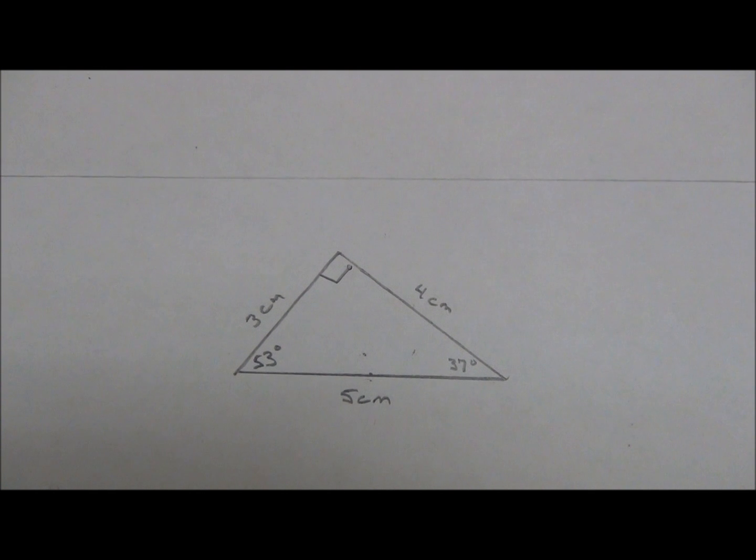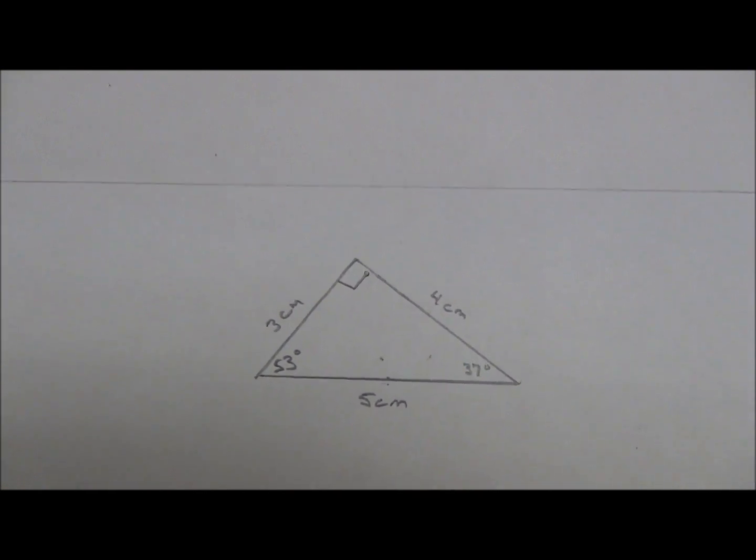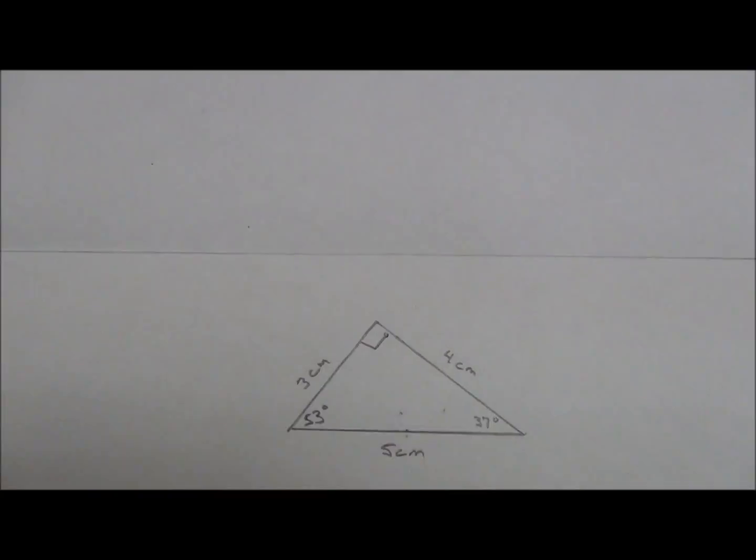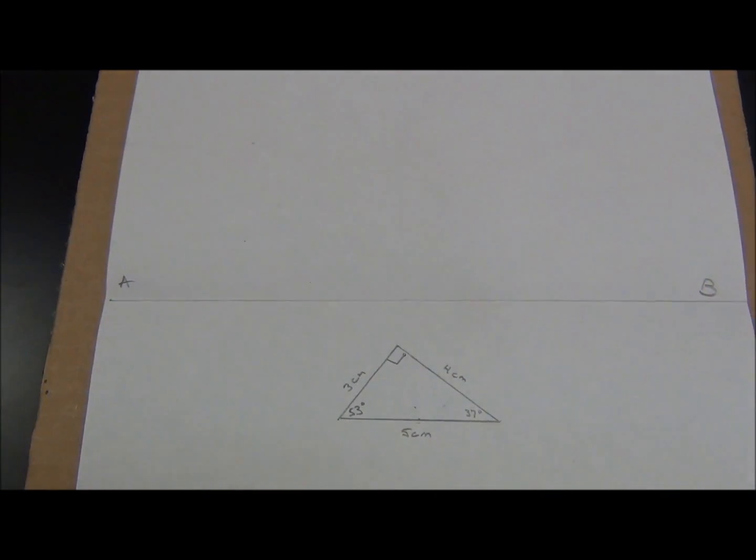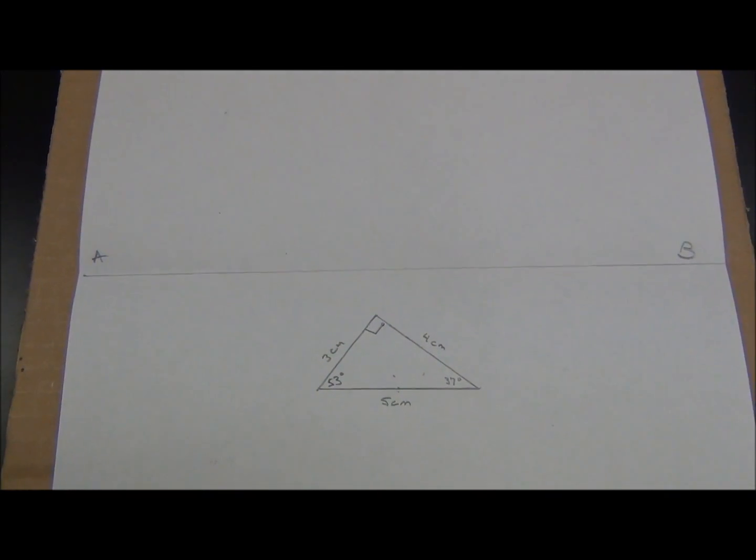My triangle turned out to be a 3-4-5 right triangle. I had 37 degrees and 53 degrees for my base angles. That gave me 90 degrees, which is closest to the line, midline AB, which is what the lab asked me to do.